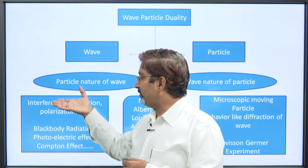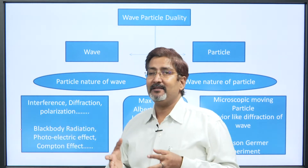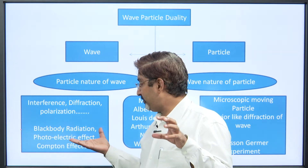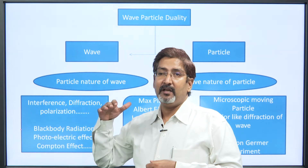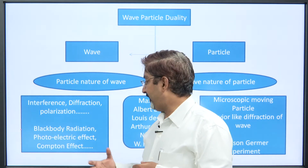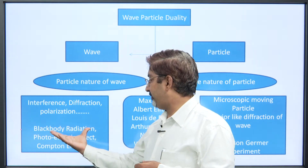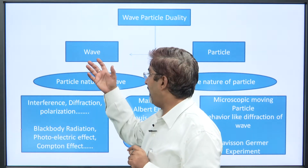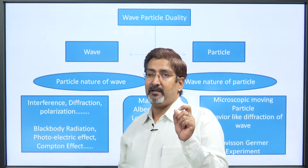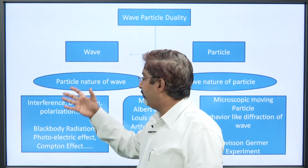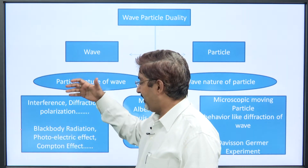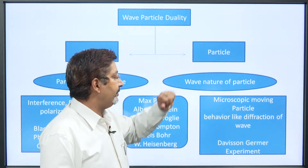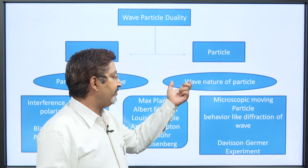After some time, we studied black body radiation, whose results could not be explained by classical wave theory. Black body radiation, the photoelectric effect, and the Compton effect could only be explained by treating light or radiation as a wave packet — that is, with particle nature. So light has both natures: particle nature as well as wave nature, and that is well accepted.